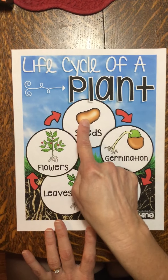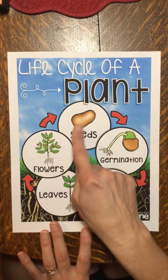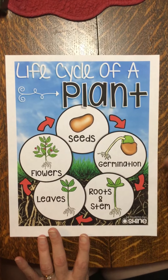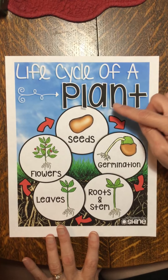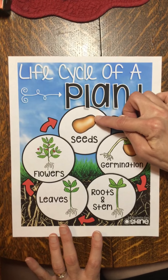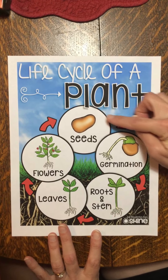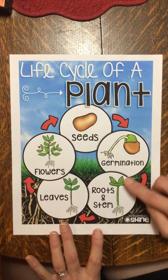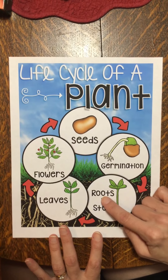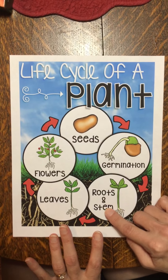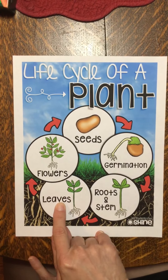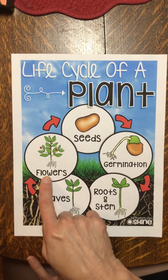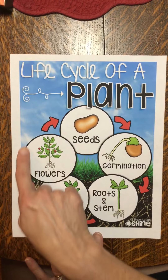Those flowers are producing the seeds, so let's go over the life cycle one more time. We start with a seed, we then have germination, then roots and stem, leaves, and finally flowers.